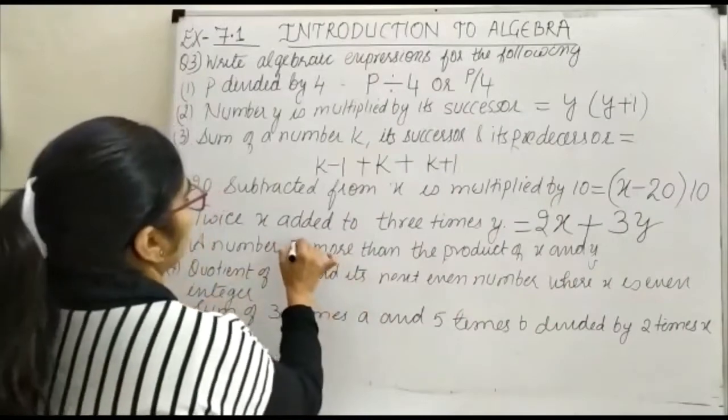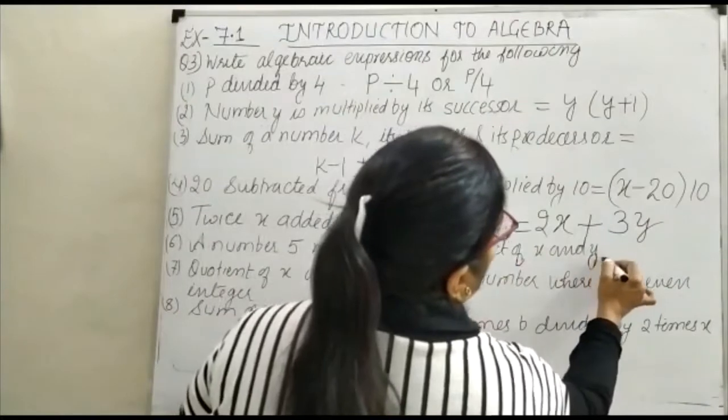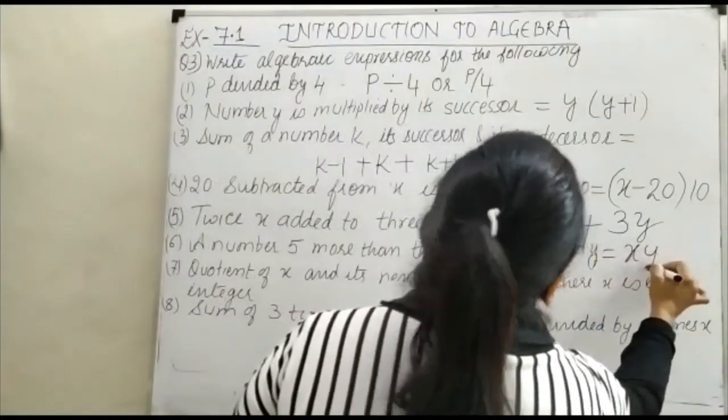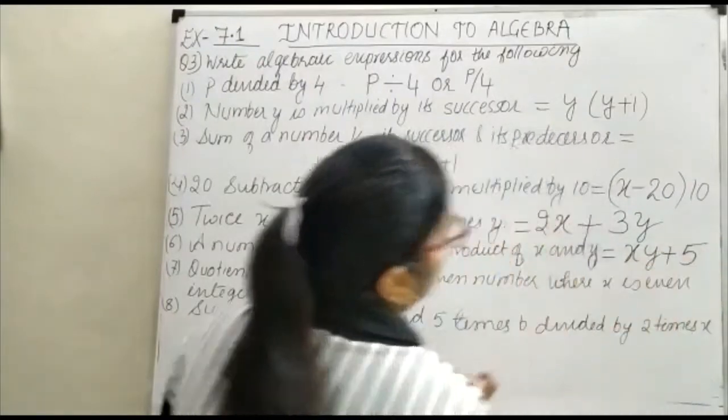Number 5 more than the product of x and y. Product of x and y is xy. Number 5 more means plus, so you add 5 to it, giving xy + 5.